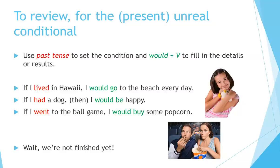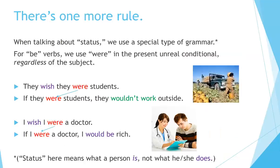Wait — we're not finished yet. There's one more rule. When talking about status, we use a special type of grammar. For be verbs, we use 'were' in the present unreal conditional, regardless of the subject. That means for every subject, the be verb is 'were' in the present unreal conditional. Look at these examples: They wish they were students. If they were students, they wouldn't work outside. I wish I were a doctor. If I were a doctor, I would be rich. Status here means what a person is, not what he or she does.